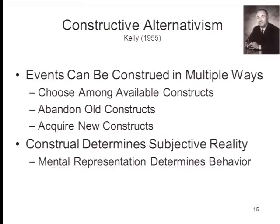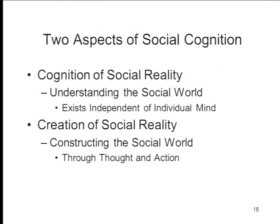This picks up on what we were talking about last week. Kelly's idea, which really antedates all of this, is that how we construe events creates our subjective reality, and it's that subjective reality that leads to our behavior. That leads us, as we introduced in the very first week of the course, to talk about these two aspects of social cognition: the first is cognition of social reality, based on the idea that there's a social world out there that we can try to understand through perception, memory, and thought processes.